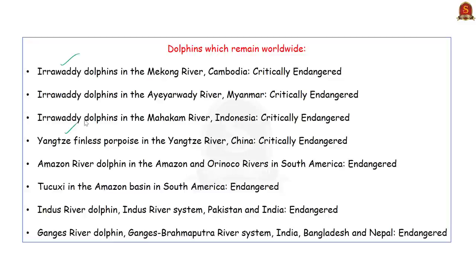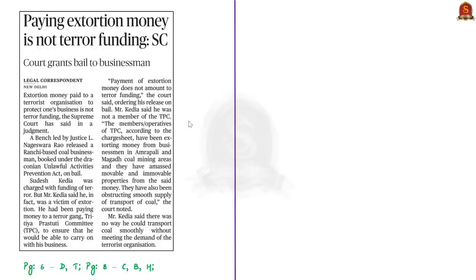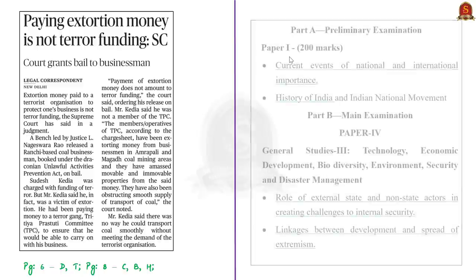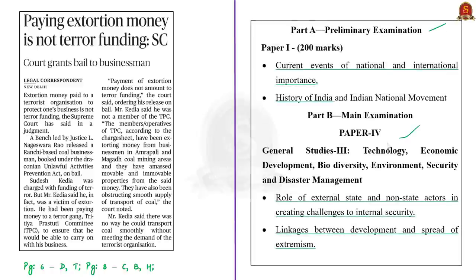Now let us take up this news article titled, Paying Extortion Money is Not Terror Funding. This article is regarding a Supreme Court judgment. It said that extortion money paid to a terrorist organization in order to protect one's business is not terror funding. In this regard, the Apex court released a Ranchi-based coal businessman who was booked under the Unlawful Activities Prevention Act. So in this context, let us discuss in brief about the Unlawful Activities Prevention Act and also some of its provisions.